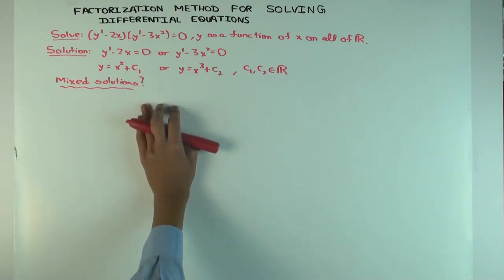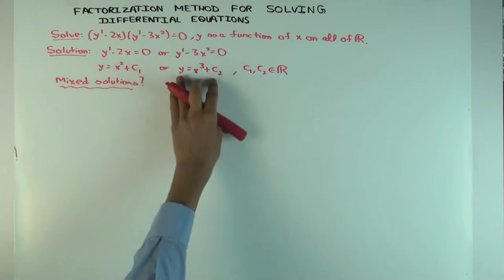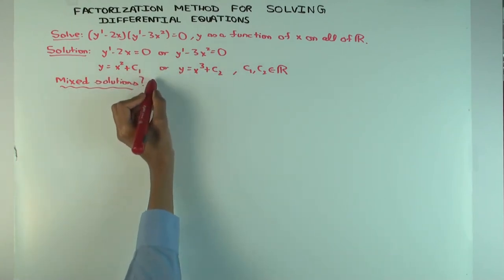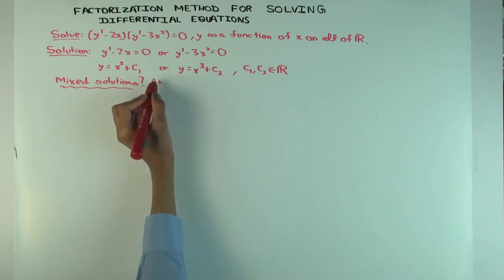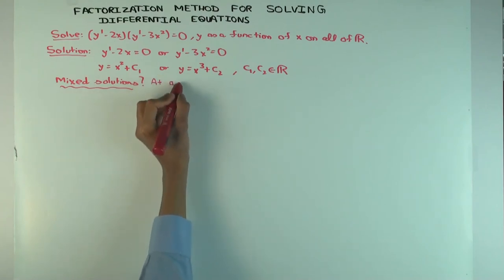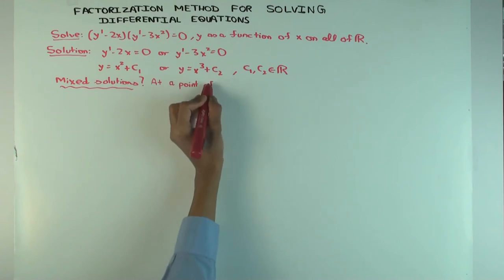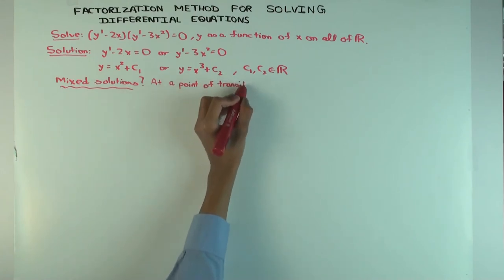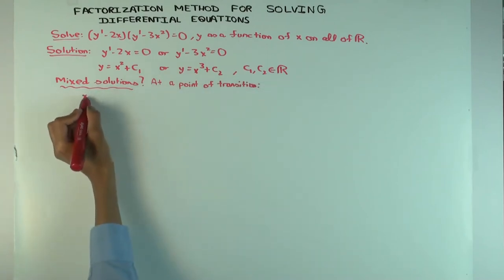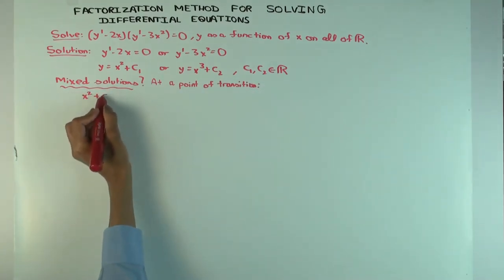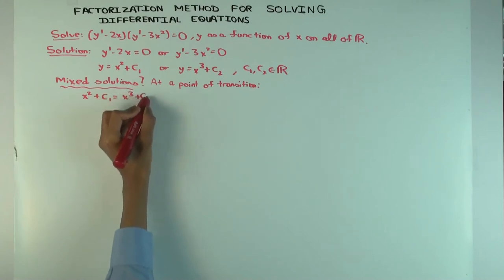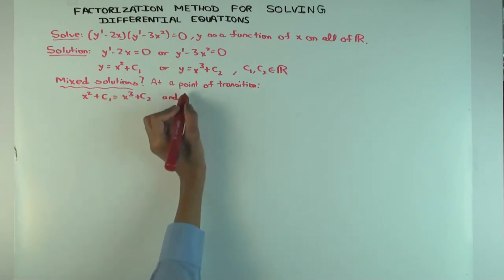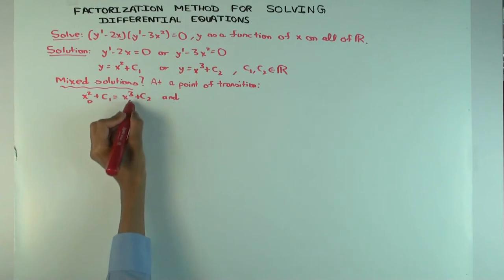For mixed solutions, we want a function which for part of the domain is x² + c₁ and for the rest is x³ + c₂. At a point of transition, it has to be continuous and the derivative has to agree. So at any point of transition x₀, we'll have two conditions: the function values must be equal and the derivative values must be equal.